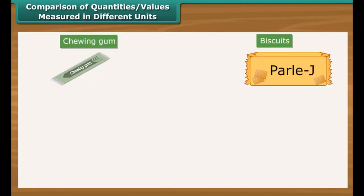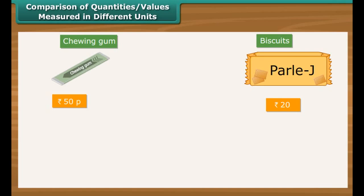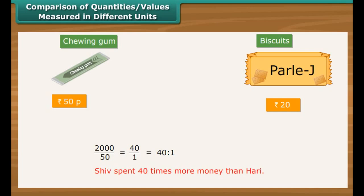Hari bought a chewing gum for 50 paise. His friend Shiv bought a packet of biscuits for rupees 20. Who spent more money and by how many times? Before comparing, we express rupees 20 as 2000 paise. Now we work out the ratio: 2000 by 50 is 40 by 1, which is equal to 40 is to 1. Therefore, Shiv spent 40 times more money than Hari.